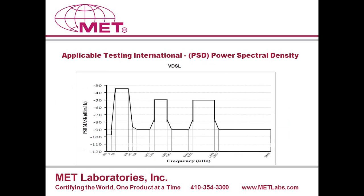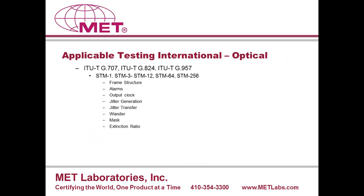For optical on the European side, ITU-T G.707, G.824, and G.957 are similar to SONET but with deviations because you're dealing with Europe's 2048 kHz clock. Tests include frame structure alarms, output clock, jitter generation, jitter transfer, wander, mask, and attenuation. Some limits differ from GR-253 but the same sort of testing is performed with different limits. For the SDH/STM interface, the optical parameters table shows limits for certain wavelengths, and the eye diagram is shown for STM-1. The wander limit for the 2048 kbit/s interface shows what the EUT cannot exceed over a 24-hour drift period.